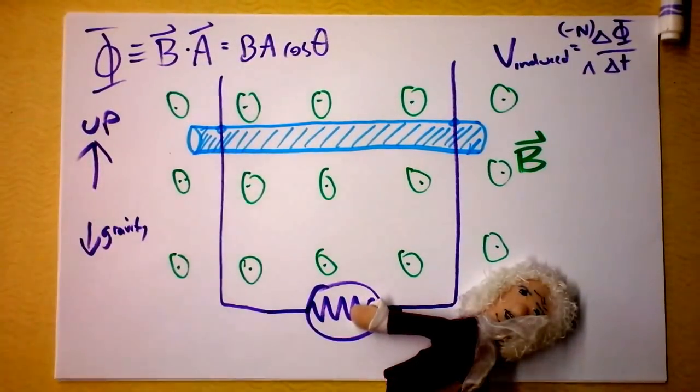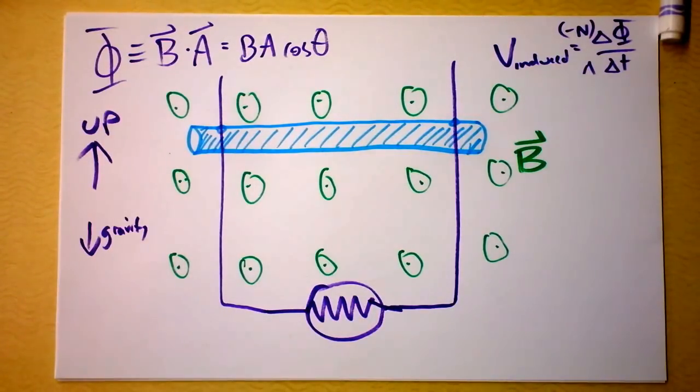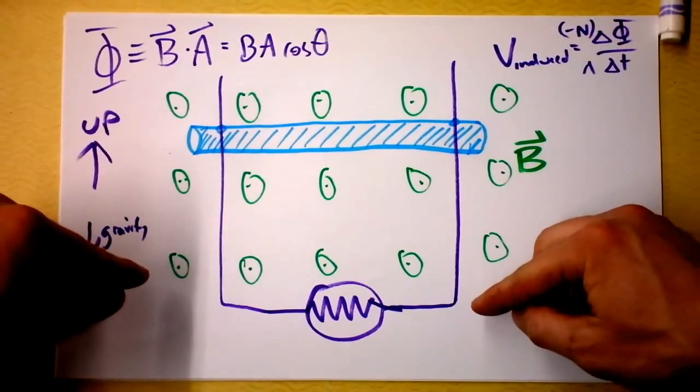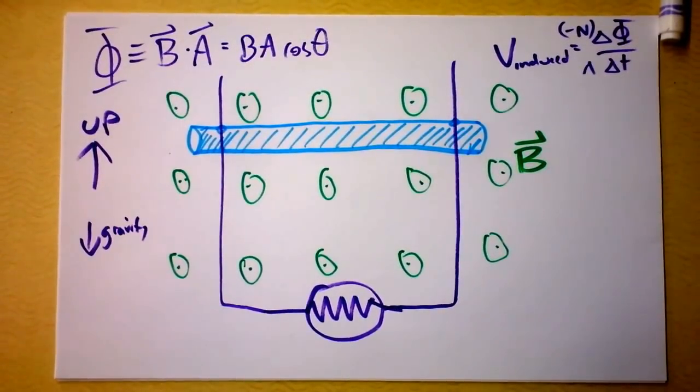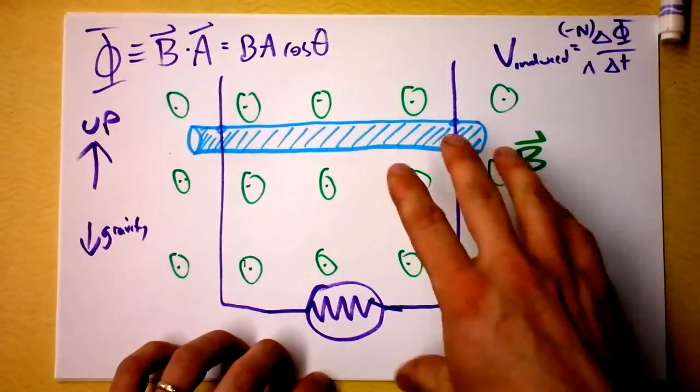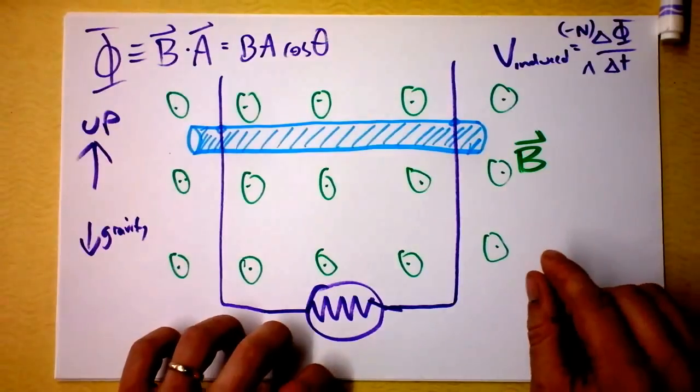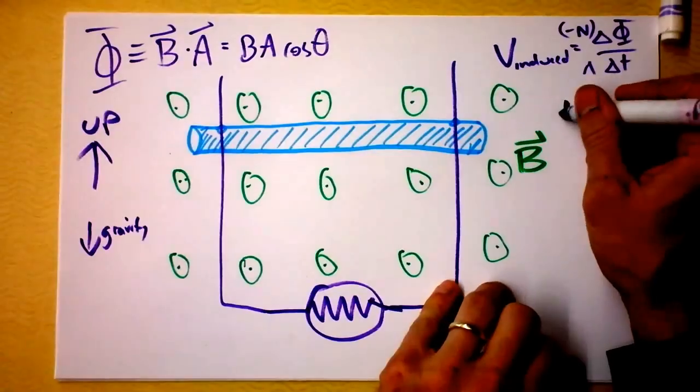So there are a few ways we can look at this, but one thing that's really cool is this light bulb will light as this bar falls. And in fact, the bar will speed up because initially there's no force on it except for the force of gravity, but it will soon reach a terminal velocity.